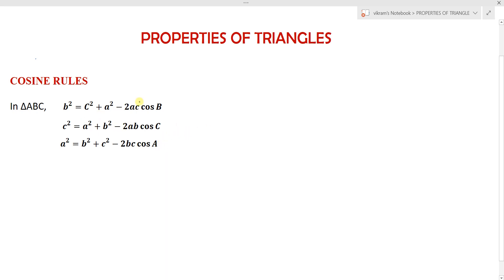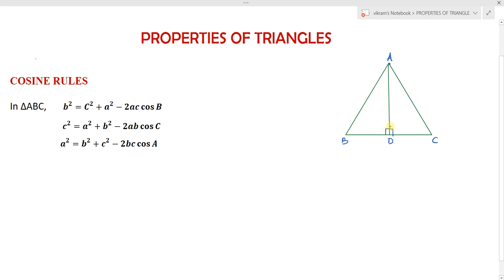Let me go through the proof of the first one: b² = c² + a² - 2ac·cos B. Consider triangle ABC with a perpendicular line drawn from vertex A to side BC, meeting it at point D. This gives us two right-angle triangles: triangle ABD and triangle ACD. The side BC has length a, AC has length b, and AB has length c.